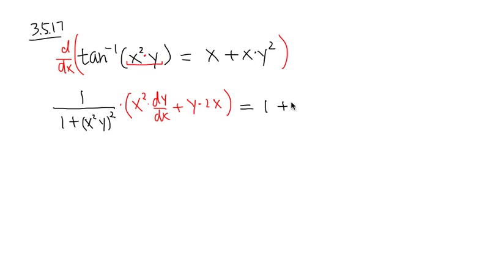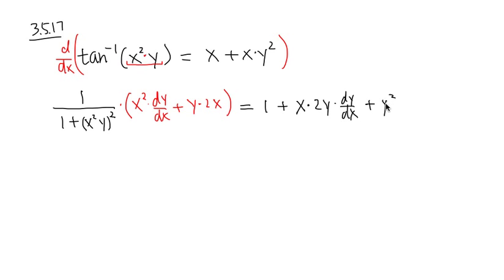For the product rule on the right-hand side: put down x, multiply by the derivative of y squared — bring the exponent to the front to get 2y, then multiply by the derivative of y, which is dy/dx. Then add the second function y squared times the derivative of x, which is just 1. The rest is algebra.